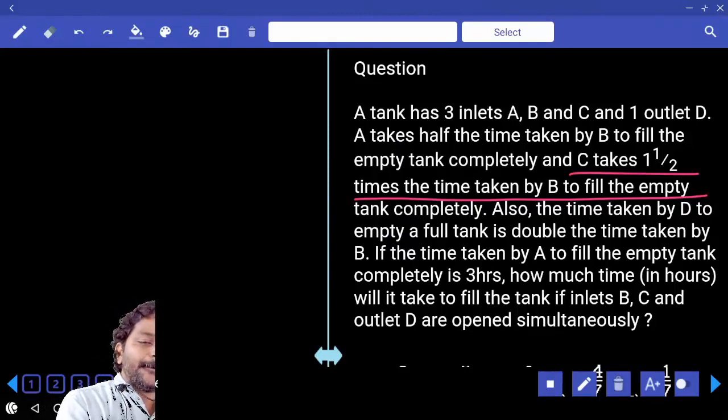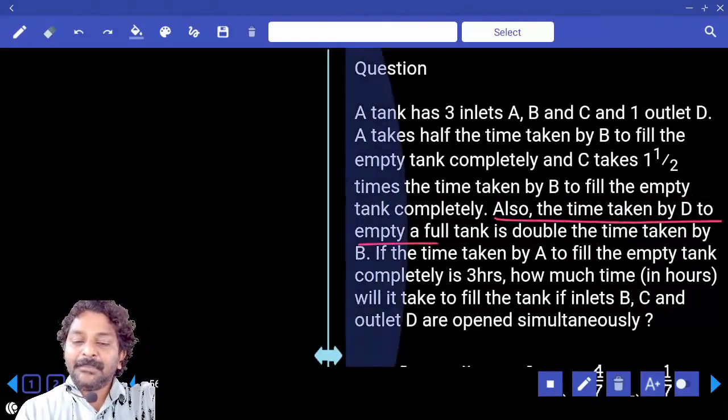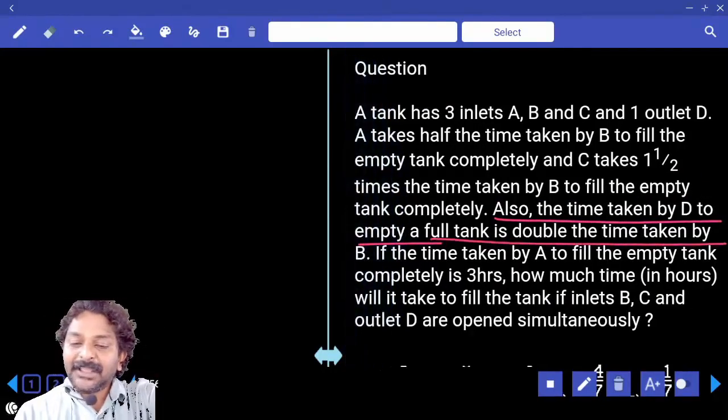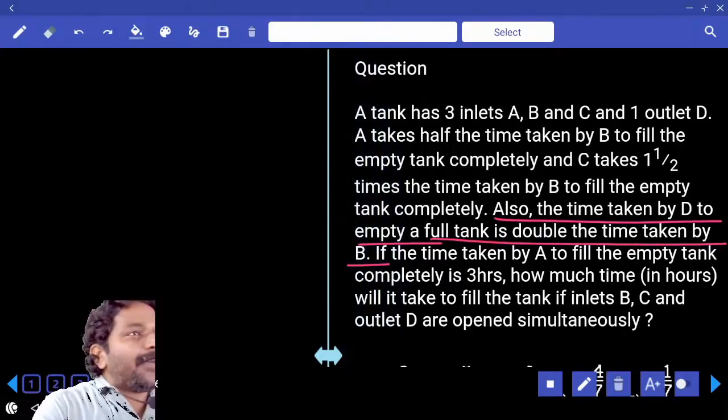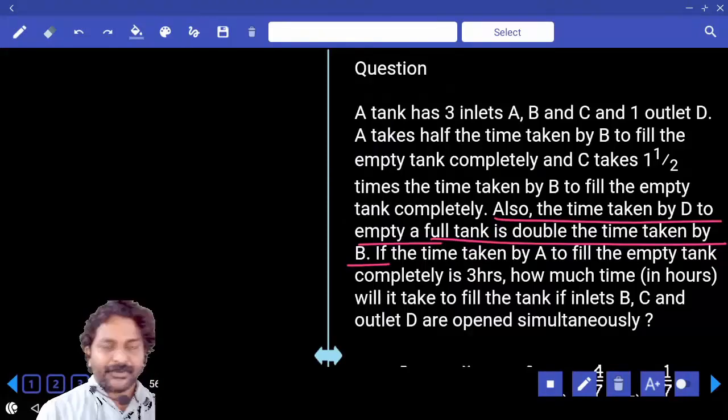Also, the time taken by D to empty the tank, which is an outlet, is double the time taken by B. What is the time taken by B? 2x. Double that, so the time to empty the tank by D is 4x.